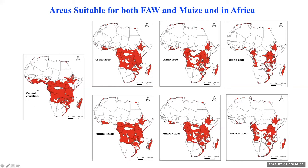Currently, large parts of Eastern, Western, and Central Africa are suitable for both fall armyworm and its major host maize, but the overlap area is projected to decrease over time. By the end of 2080, only certain red areas will have suitable conditions for both fall armyworm and maize. These red areas have the potential to serve as breeding grounds for fall armyworm, similar to Florida and Texas in the US. From these hotspot regions, fall armyworm could seasonally migrate north and south and cause economic loss.